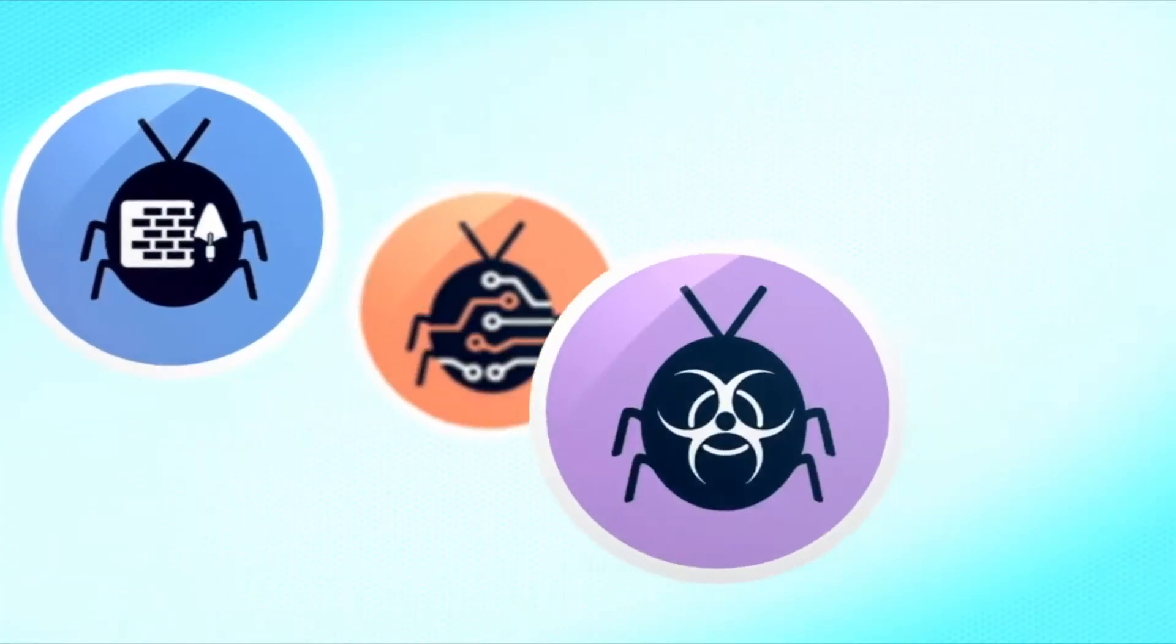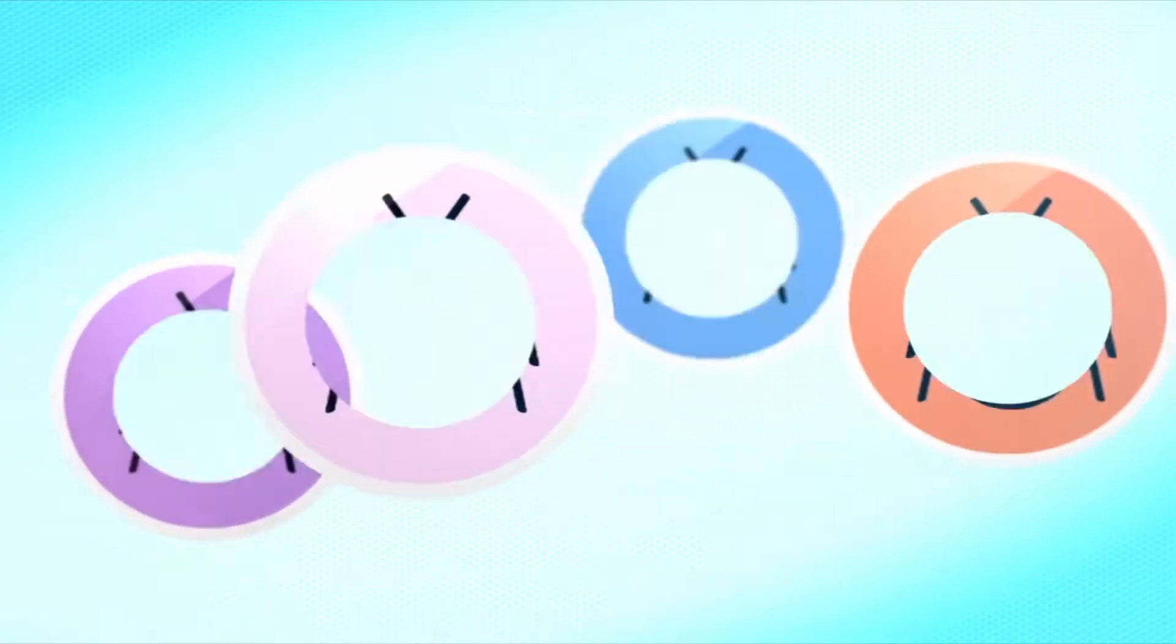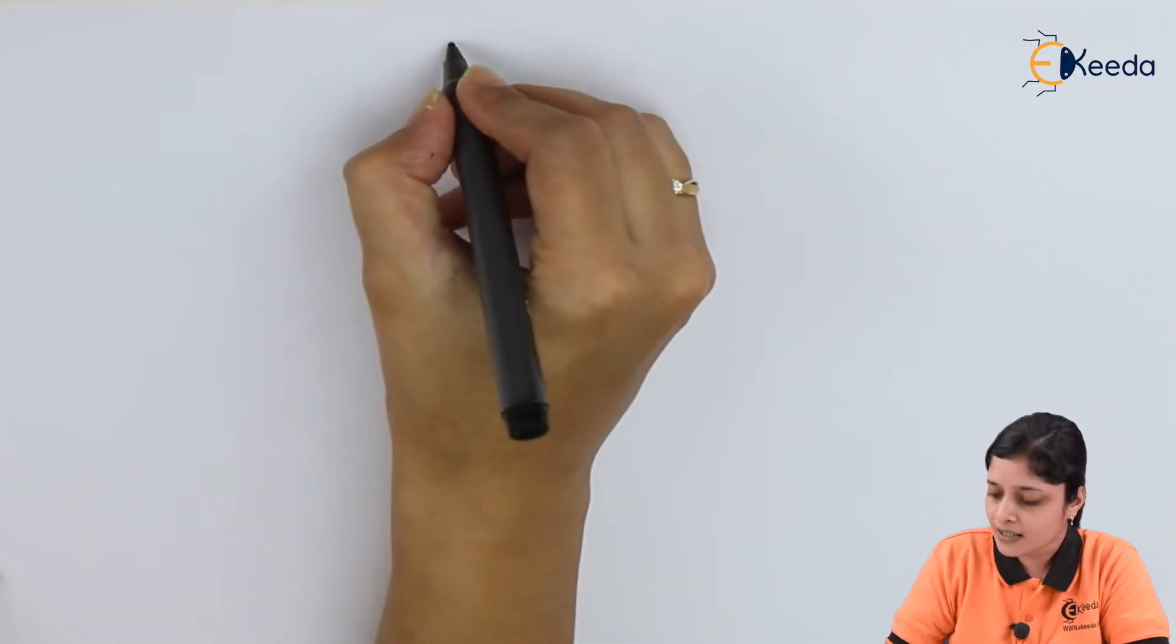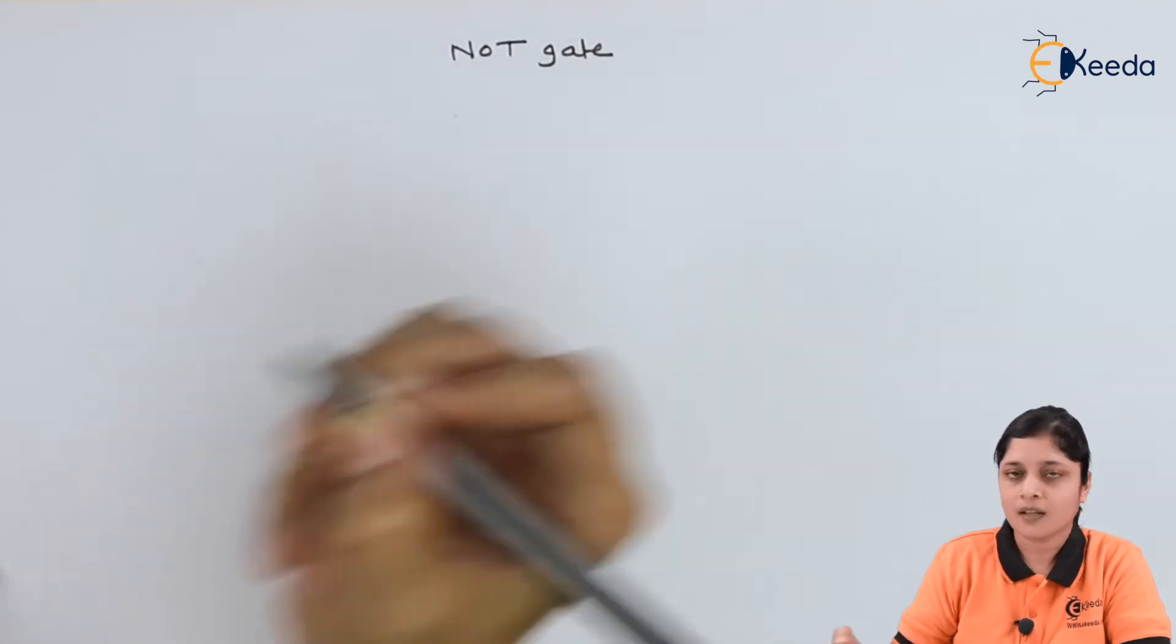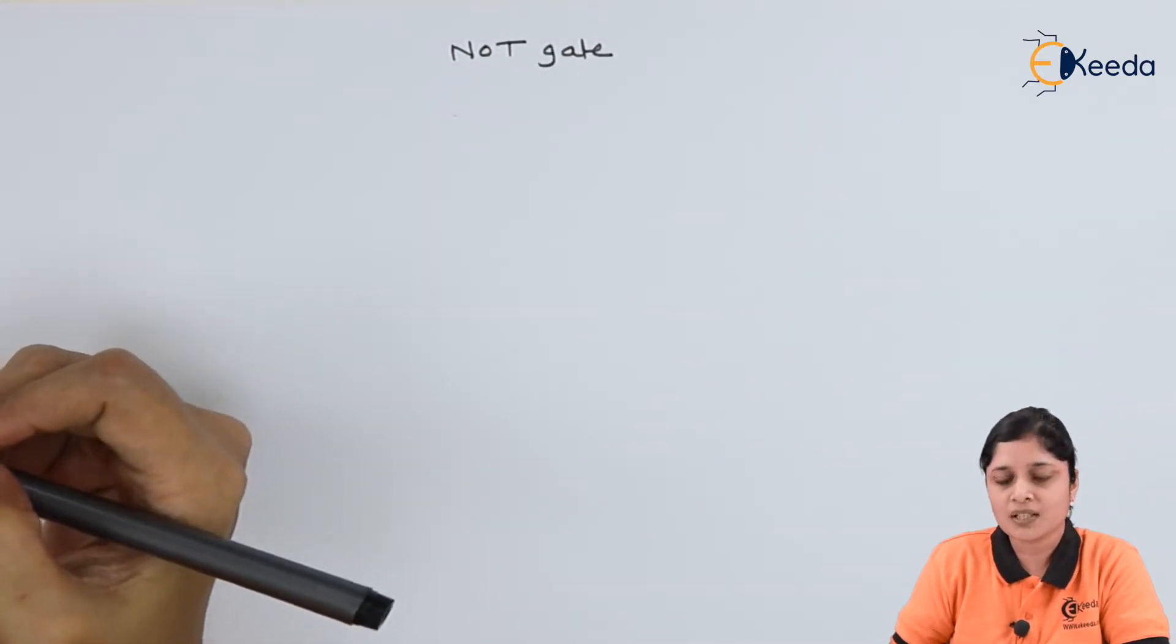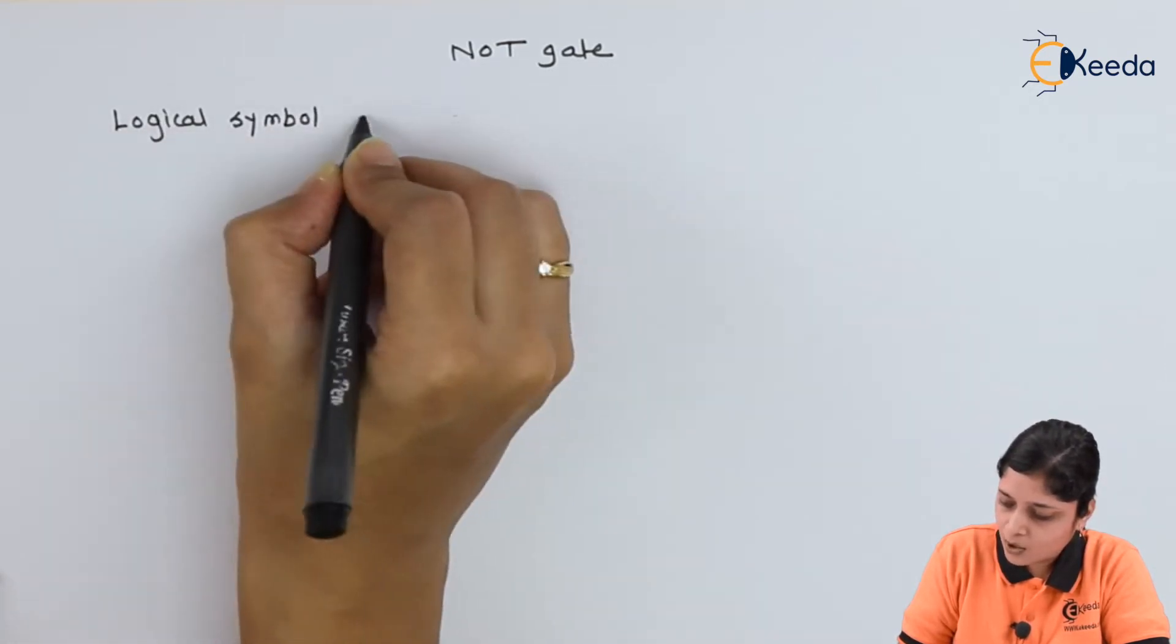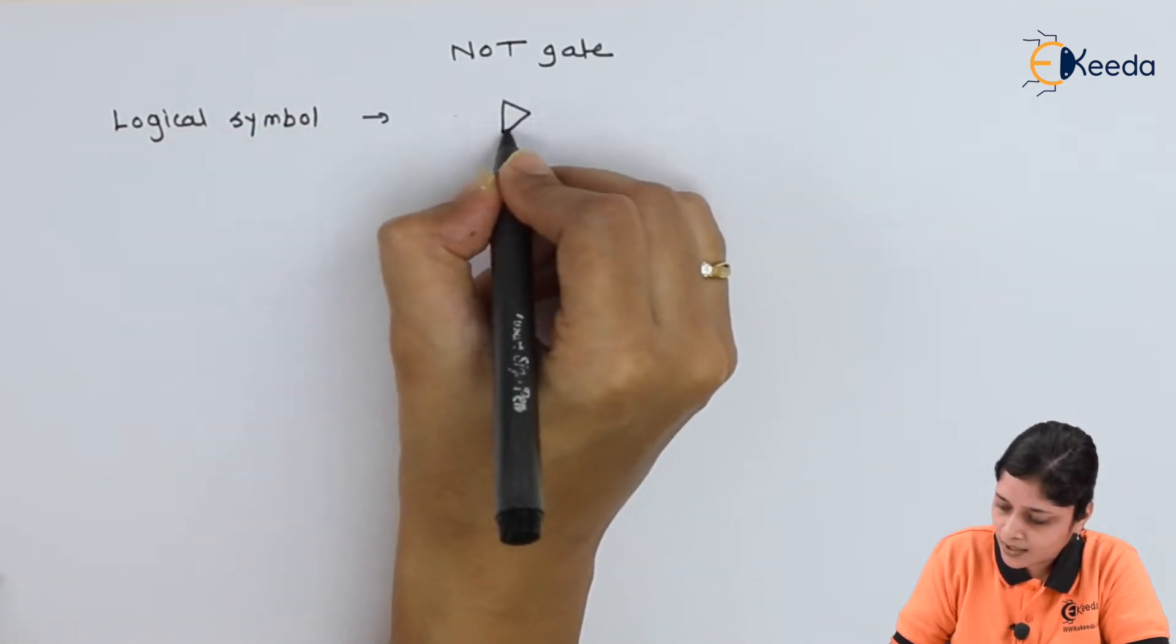Now your heading is NOT gate. We will see its logical symbol. Logical symbol for NOT gate is like this.